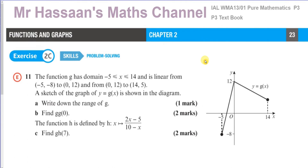The function g has domain -5 to 14 inclusive, and is linear from (-5, -8) to (0, 12), and then from (0, 12) to (14, 5). It's a piecewise function: before x=0 it has one rule with a steep positive gradient, and between 0 and 14 it follows a different rule with a shallower negative gradient.